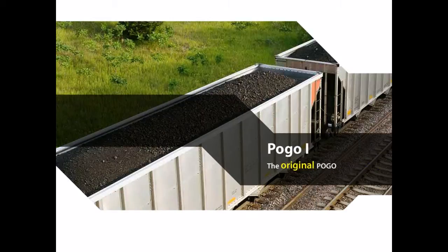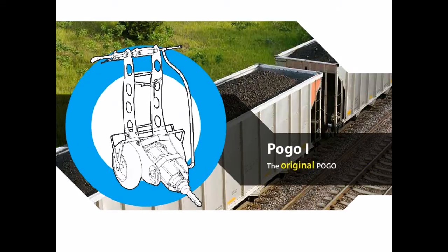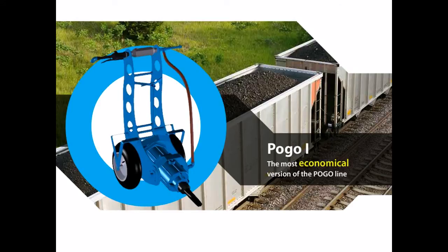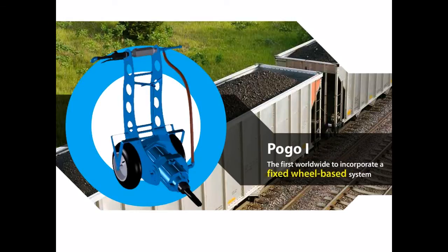The original POGO makes opening hopper car gates faster and safer. No more pulling and pushing on long breaker bars. With its fixed wheel position, the POGO 1 is the most economical version of the POGO line, which is ideal for the operation that only unloads a few cars at a time. The portable POGO 1 was the first of its kind worldwide, incorporating a fixed wheel-based system.